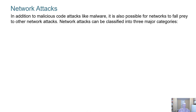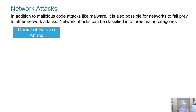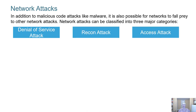In addition to malicious code attacks like malware, networks can fall prey to other types of network attacks. Network attacks can be classified into three major categories: denial of service, reconnaissance attack, and access attacks.